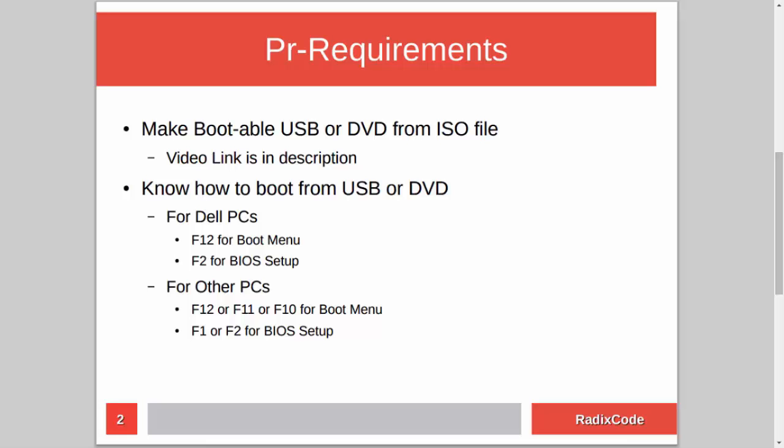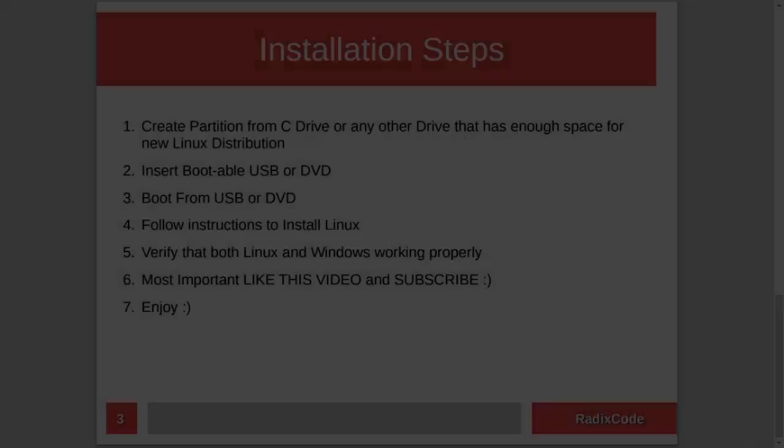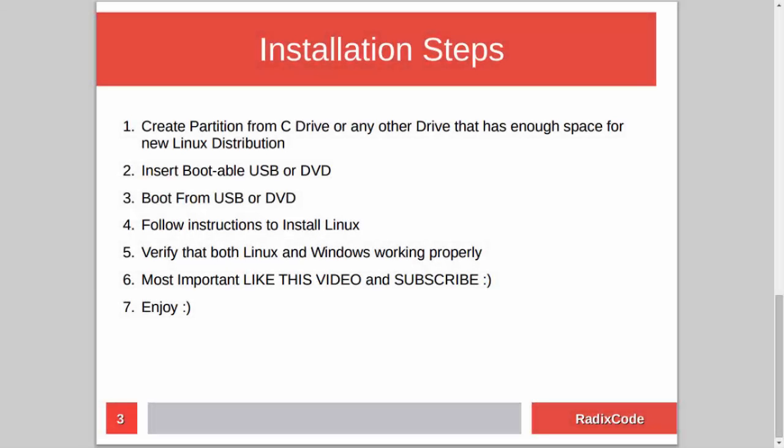The installation steps are very simple. First, we need to create an empty partition for our Linux distribution from the C drive or any other drive that has enough space. After this, we insert our DVD or USB drive, restart the computer, boot from USB or DVD, and then install our Linux distribution.